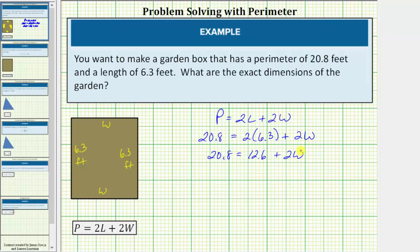The next step is add or subtract to isolate the variable term, which means you want to undo this positive 12.6 on the same side of the equation as 2w, by subtracting 12.6 on both sides.